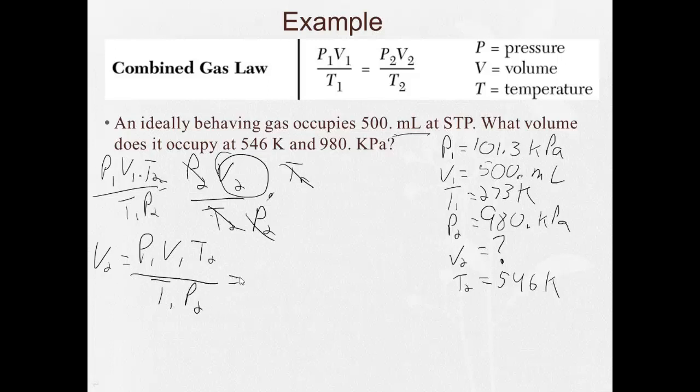I know, seems crazy now. Don't worry. You're going to get used to it because we're going to practice it a lot. Now, I'm ready to plug and chug without throwing away my units. It's 101.3 kilopascals times V1, 500 milliliters times T2, 546 kelvins. I'm going to draw a little line here so I don't bump them into each other. Divided by T1, 273 kelvins. Divided by P2, 980 kilopascals.